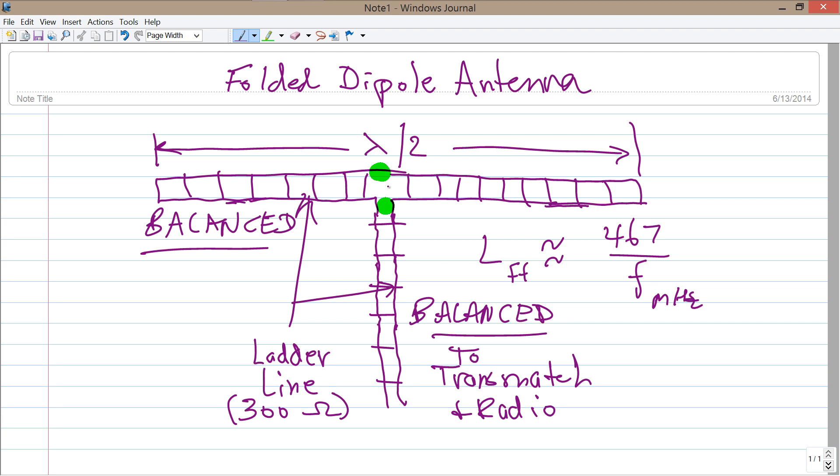Imagine, for example, that you have a certain amount of current flowing at this feed point. It gets less and less and less and less as you get out towards the end, until it's essentially zero at this point and this point. These are, in effect, voltage loops or current nodes.